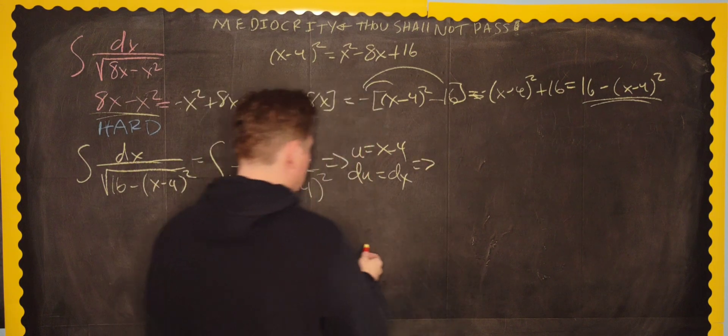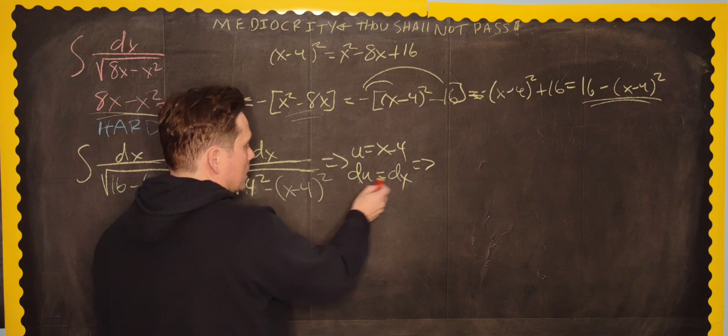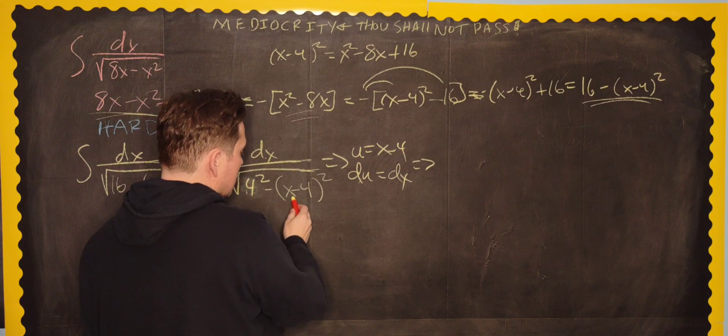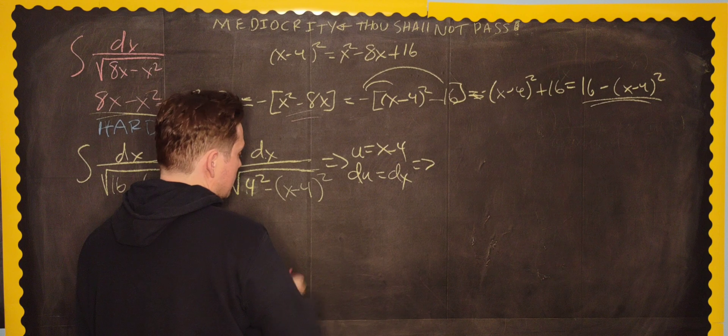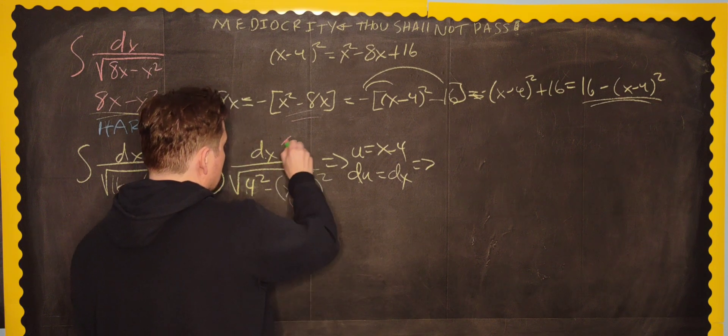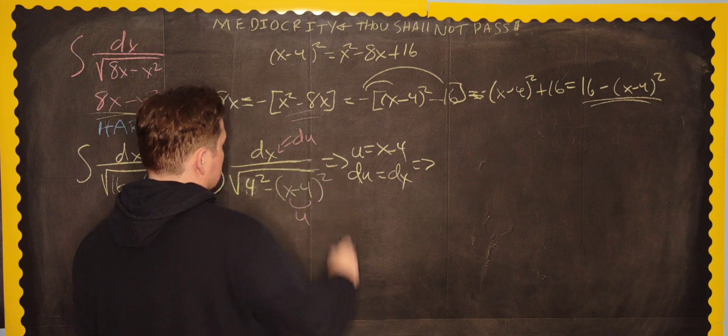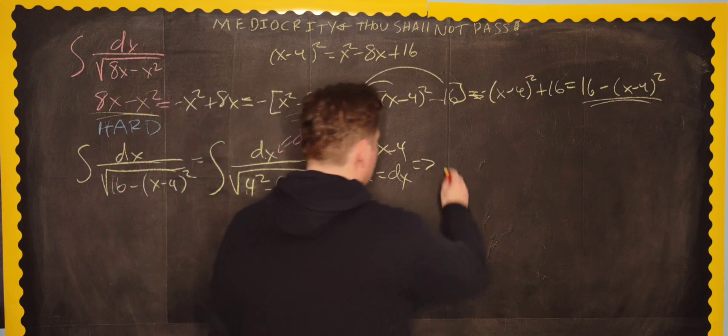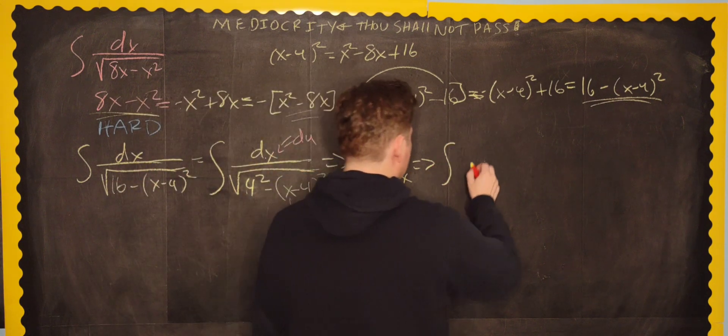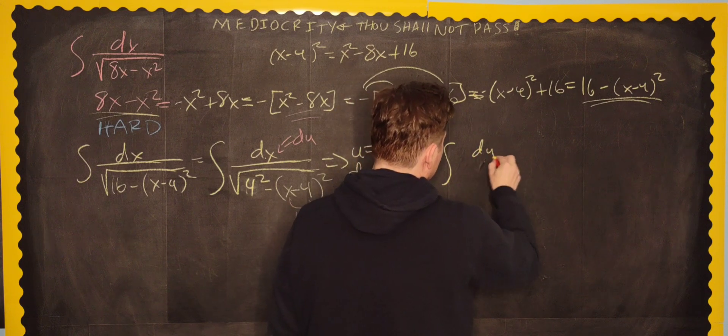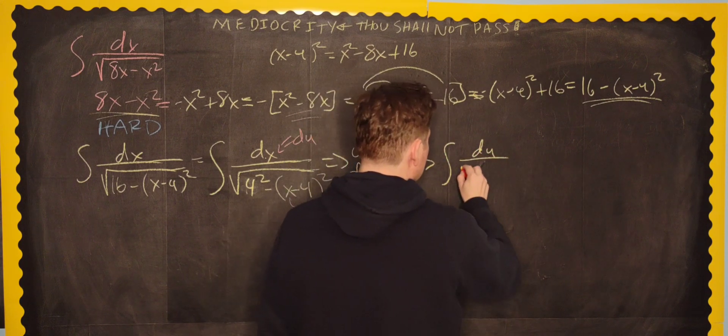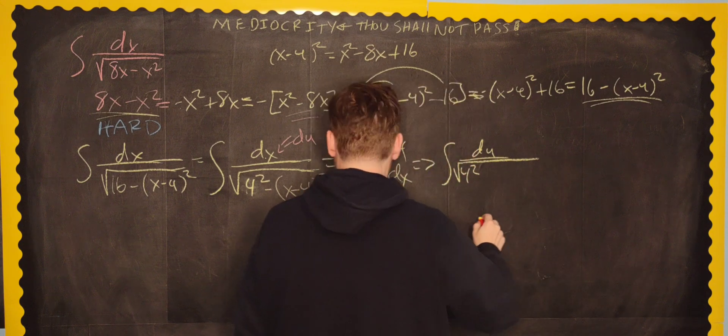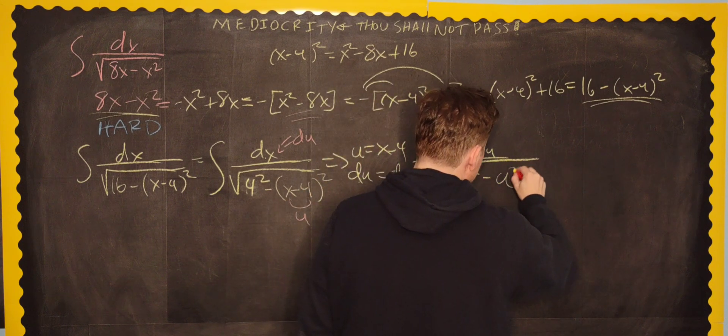That's going to give us, then, take a look. So dx is going to get replaced with du, and then x minus 4 is going to get replaced with u. So this part becomes u, and this part becomes du, like this. The 4 squared stays. It doesn't change. So you're going to have the anti-derivative, then, of du now on top, divided by 4 squared, and then the square root of 4 squared minus u squared.